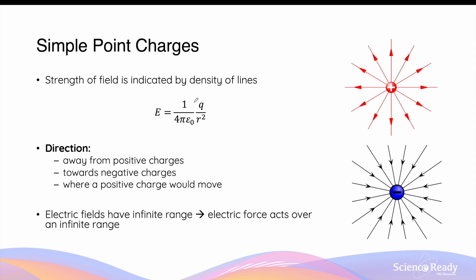Electric fields are better visualized by drawing field lines, which are arrows that indicate both the magnitude and the direction of the electric field. The strength or magnitude of the electric field is indicated by the density of these field lines. When the field lines are closer together, the strength of the field is greater, and when the lines are further apart or lower density, the strength of the field is weaker.